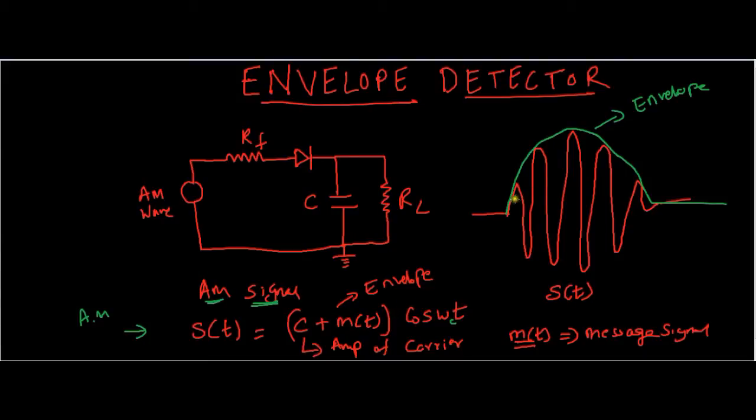As you can see this is our message signal. This is S(t) and the c plus m(t) is nothing but the peak values of this signal. What you are seeing in the green sketch is the envelope of S(t). The circuit which I have drawn here will detect the envelope of the signal.